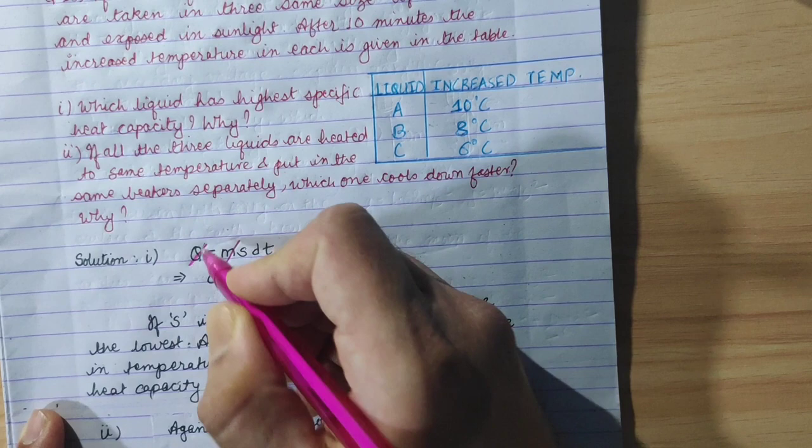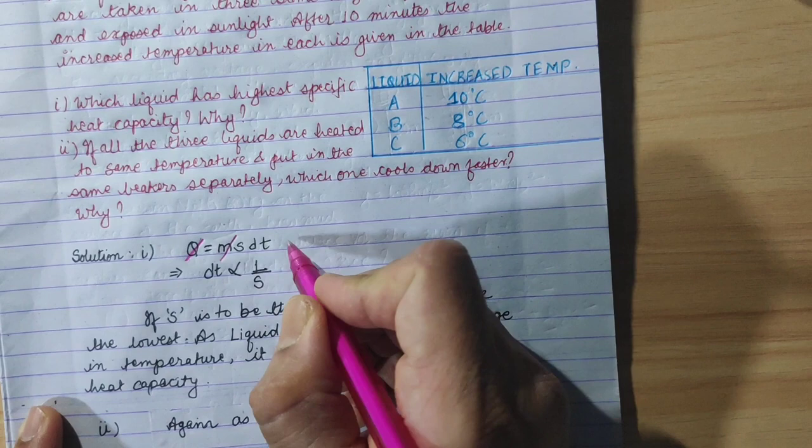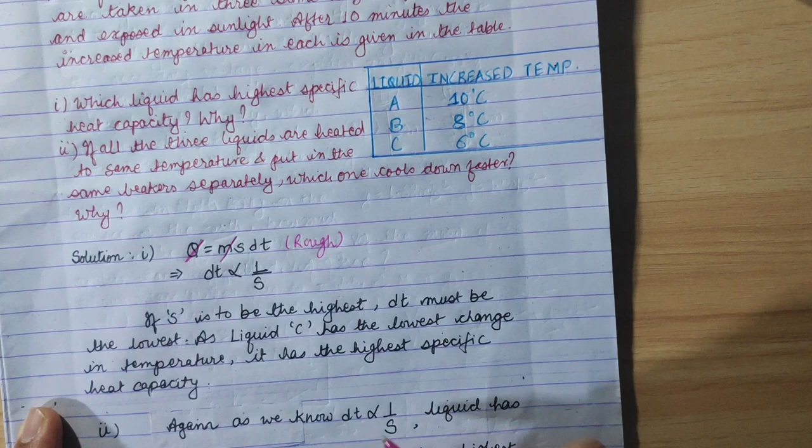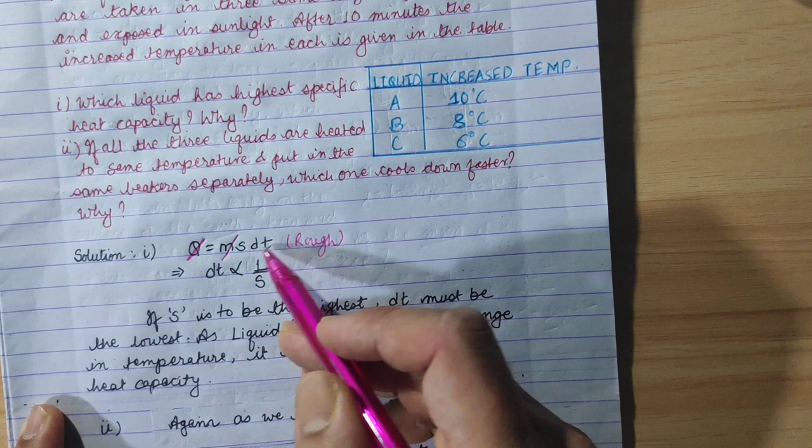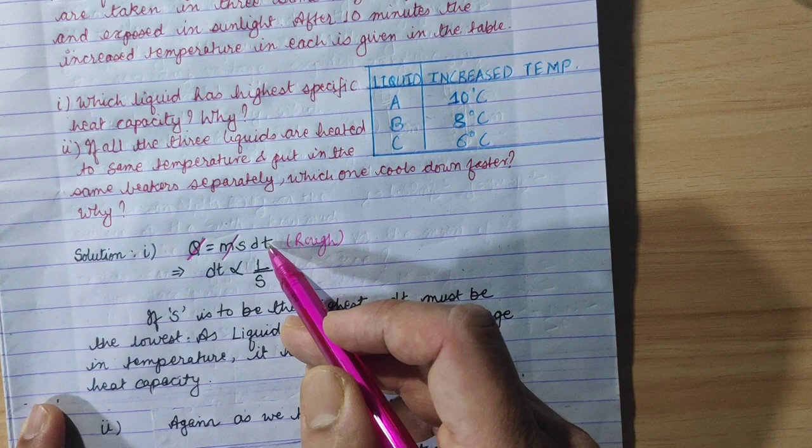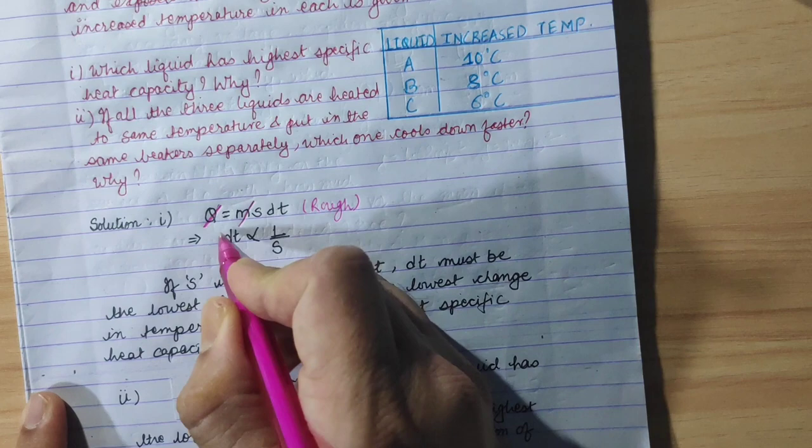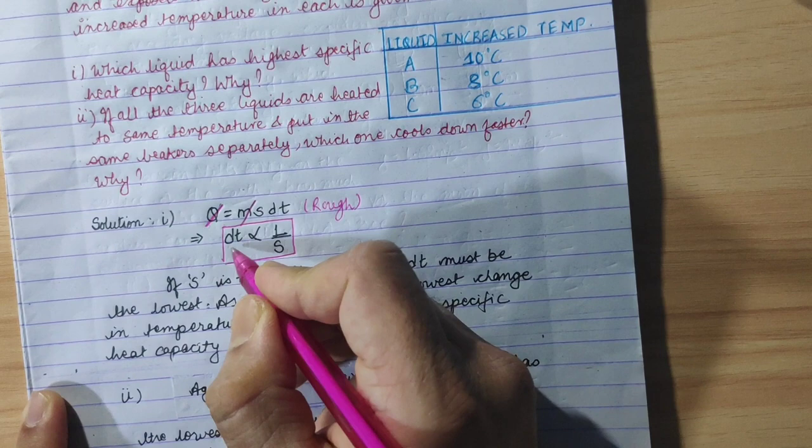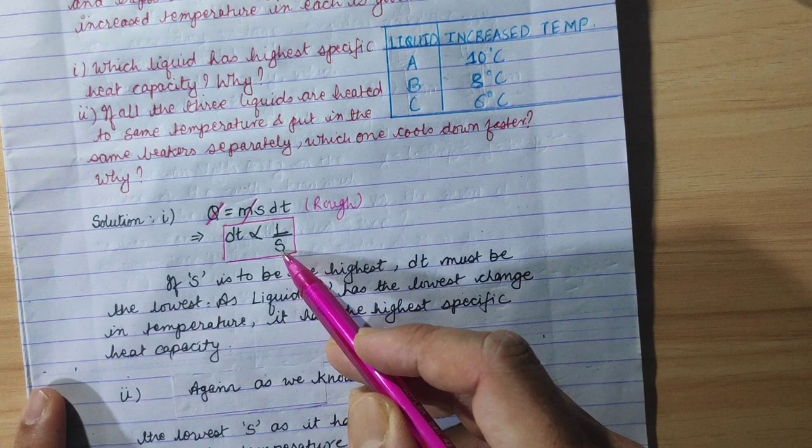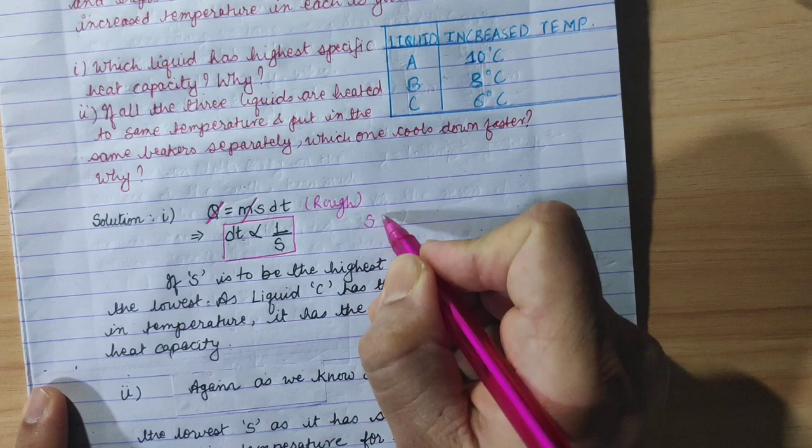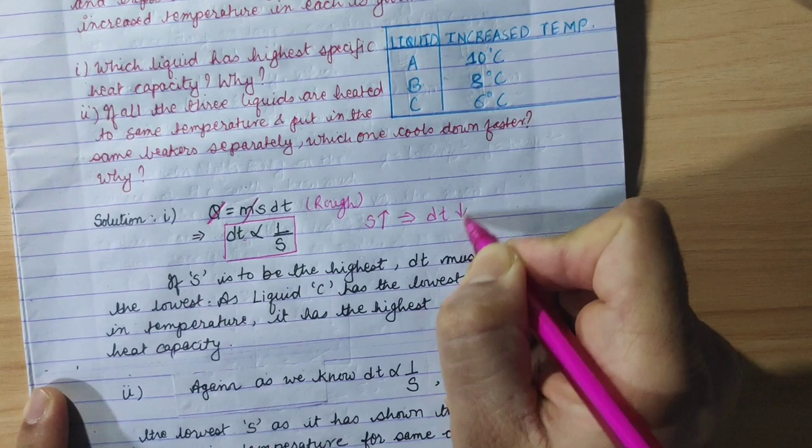Since the amount of heat Q and mass m are equal, we can write Q = s∆T, where s is specific heat capacity and ∆T is change in temperature. From this relation, we see that change in temperature is inversely proportional to specific heat capacity. So if specific heat capacity is increased, change in temperature is less.